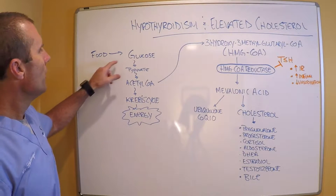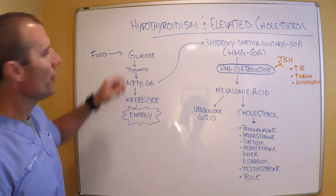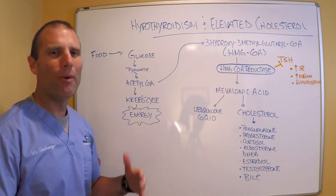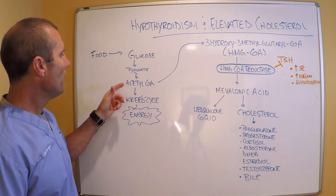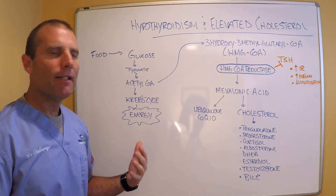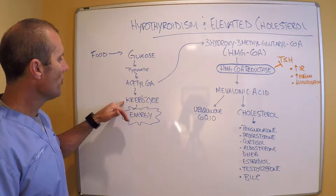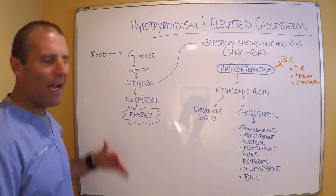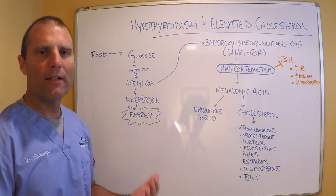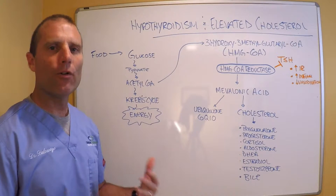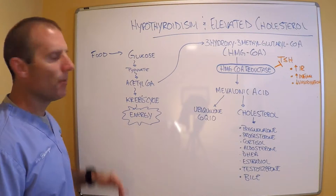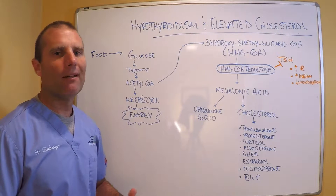When you eat food, food is converted into glucose in your bloodstream. Glucose is then converted into something called pyruvate. Pyruvate is then converted into something called acetyl-CoA. And acetyl-CoA enters into something called your Krebs cycle, which is how we actually generate energy. So when you exercise and just your daily metabolism, as long as you're in an aerobic state, this is what happens to glucose.